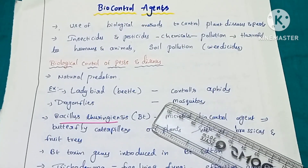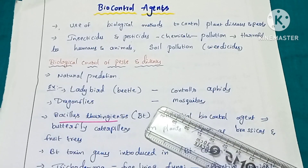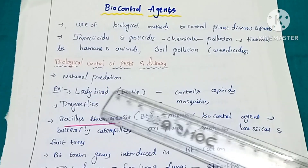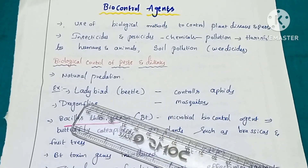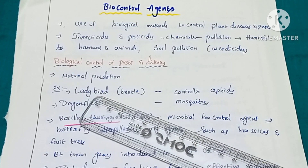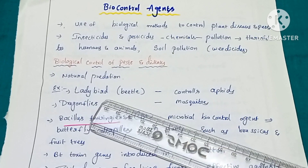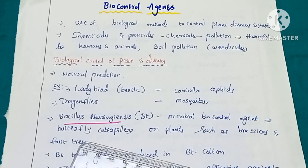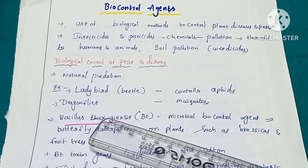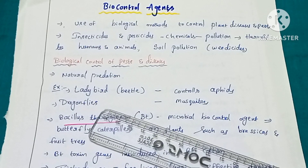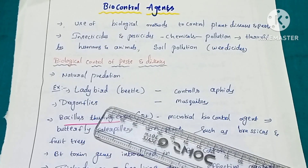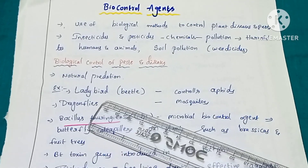To avoid these problems, agricultural scientists are trying to use biocontrol agents — that means living organisms used as biocontrol agents. These biocontrol agents act by the principle of natural predation. Predation means one living organism eats another living organism. In nature, predation is seen, and among insects also, there is predation.